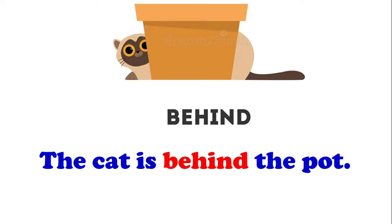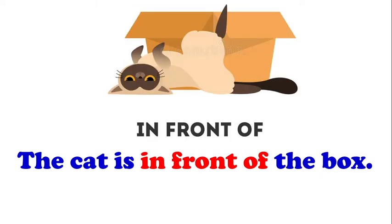See the next picture. What can you see in the picture? Yes, you are right — a cat and a box. Where is the cat? The cat is in front of the box. In front of. Where is the cat? The cat is in front of the box.